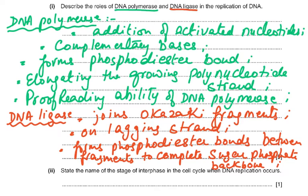You must attempt both DNA polymerase and ligase to gain maximum marks. DNA polymerase: addition of activated nucleotides, complementary base pairing, forms phosphodiester bonds, elongates the growing polynucleotide strand, and proofreading - checking that the bases are in the correct complementary base pairs. DNA ligase: joins the Okazaki fragments on the lagging strand and forms the phosphodiester bonds between the fragments to complete the sugar-phosphate backbone.